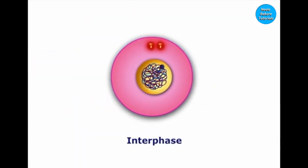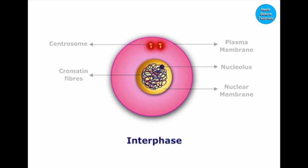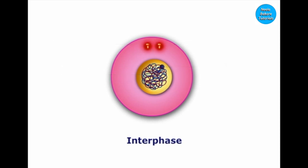This is a cell which has completed interphase. The nucleus is large, and the nuclear membrane and nucleolus are clearly visible. Chromatin fibers are thin and thread-like. The centrosome is also seen here, as this is an animal cell.